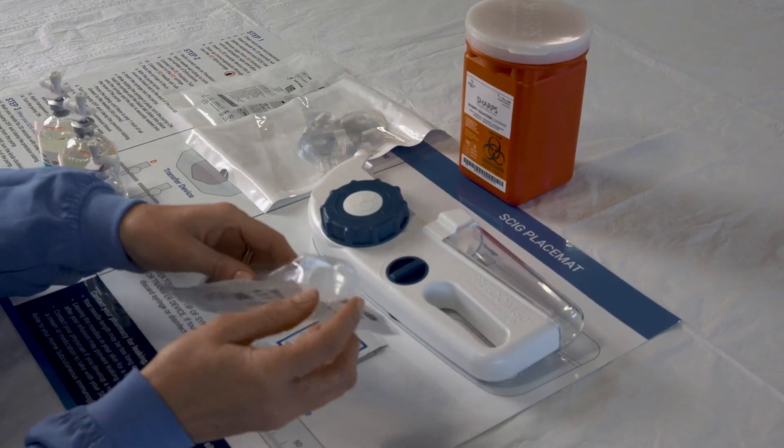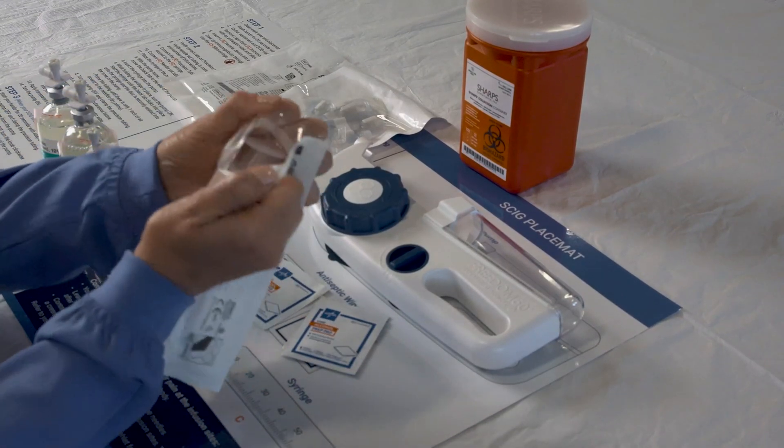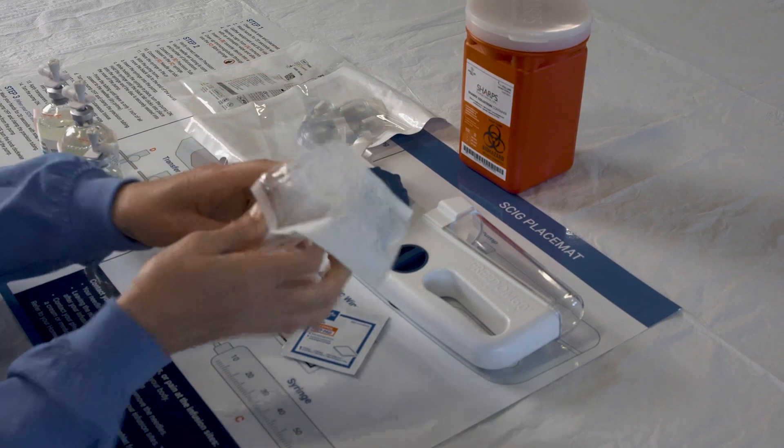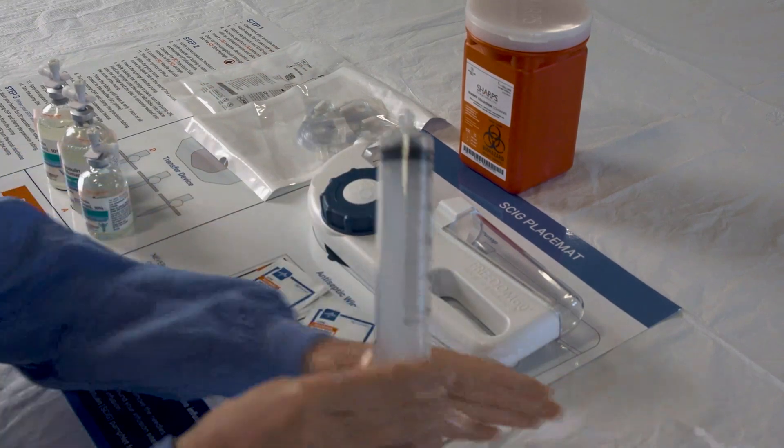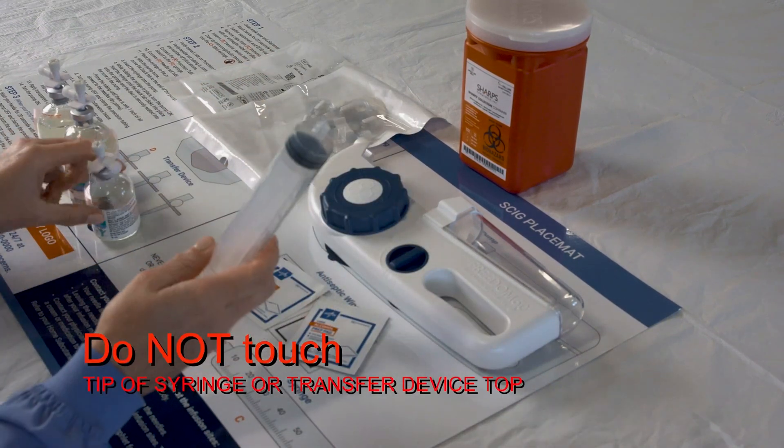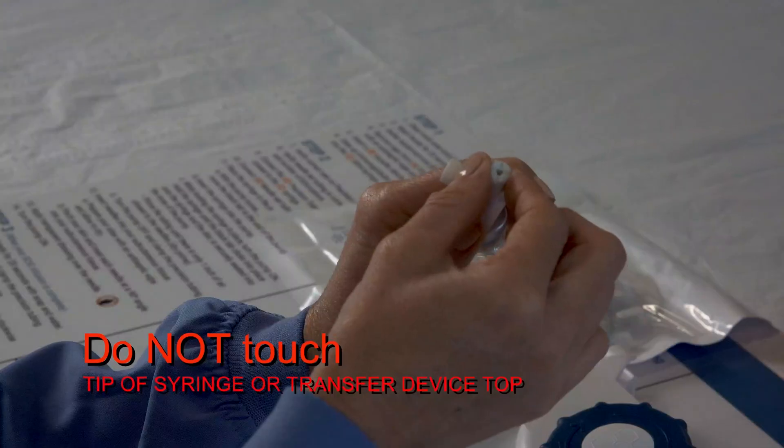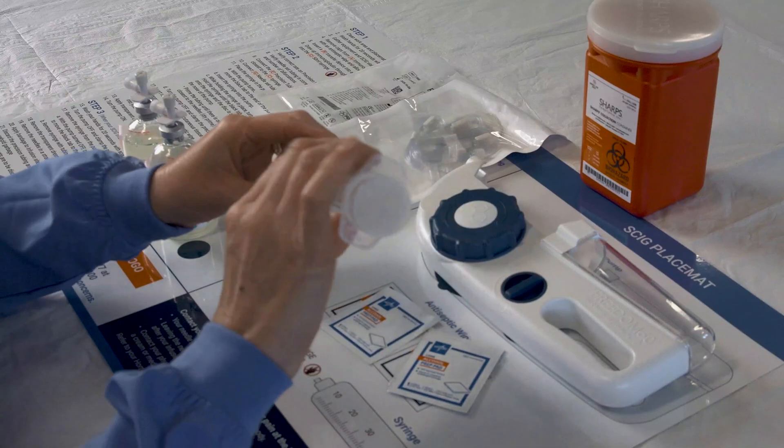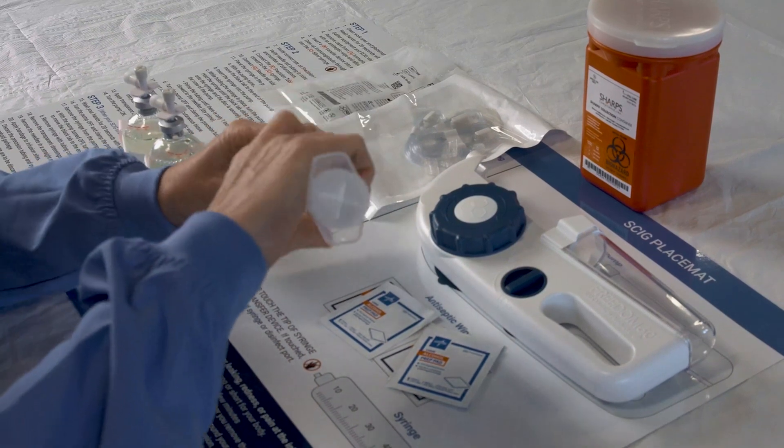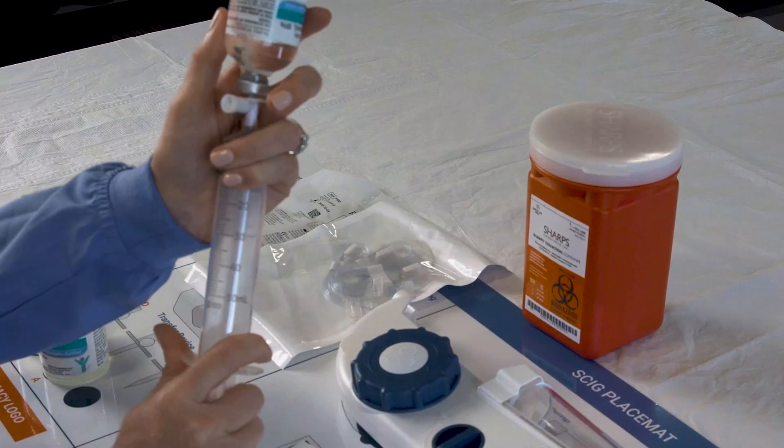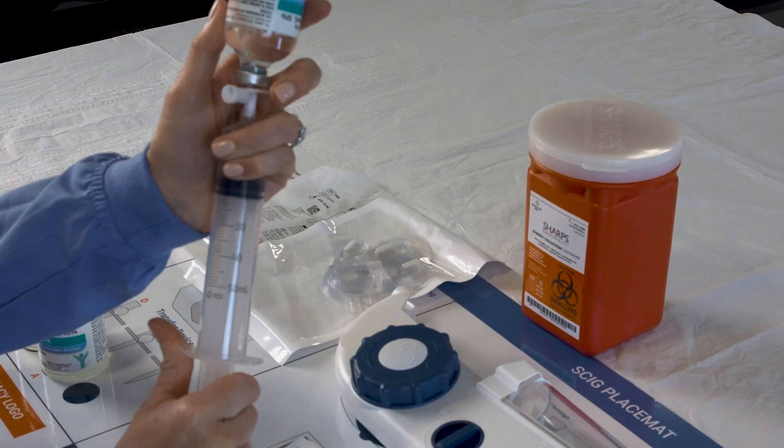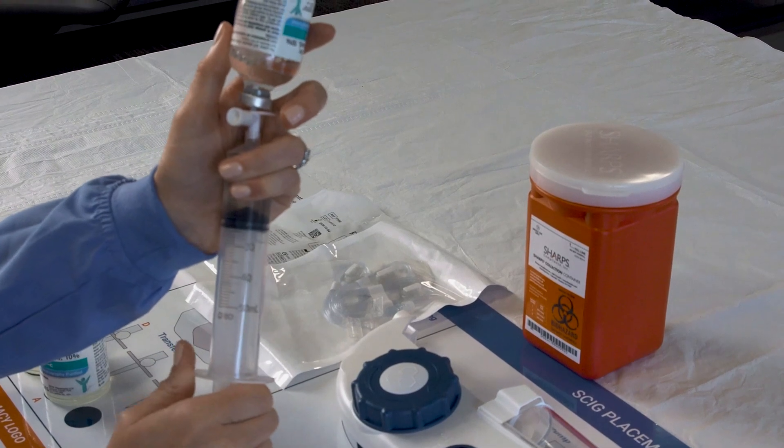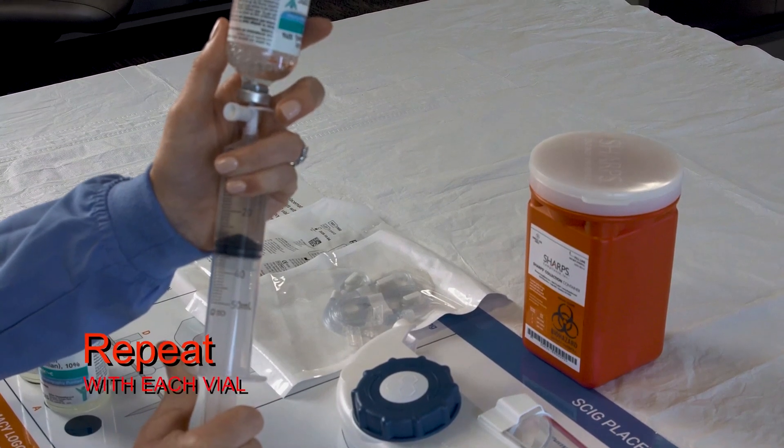Open the package containing the 50ml syringe. Twist the cap off the first transfer device and screw the syringe onto the device, and withdraw the medication from the vial. Repeat for each vial.